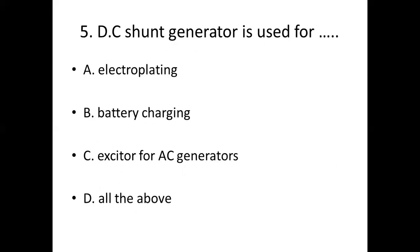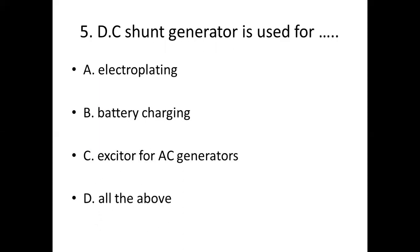Fifth bit: DC shunt motor is used for dash. Option A: Electroplating. Option B: Battery charging. Option C: Exciter for AC generator. Option D: All of the above. Answer — Option D: All of the above.